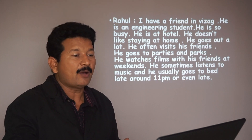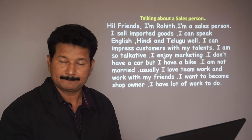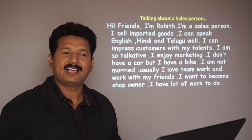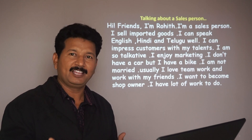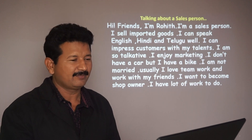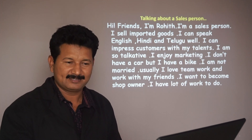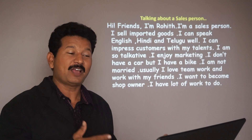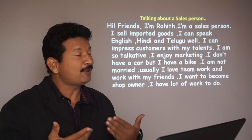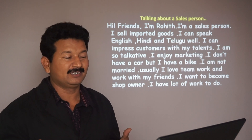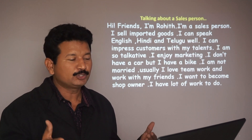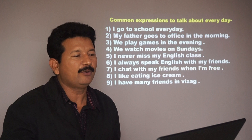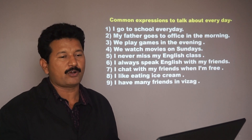Now let us see the activity of a salesperson. Hi friends, I'm Robin, I'm a salesperson. I sell imported goods. I can speak English, Hindi and Telugu. I can impress customers with my talents. I am very talkative, I enjoy marketing. I don't have a car but I have a bike. I'm not married. I love teamwork and work with my friends. I want to become a shop owner.